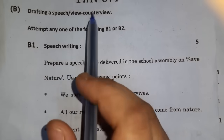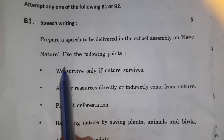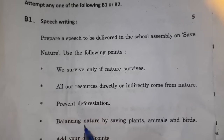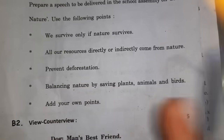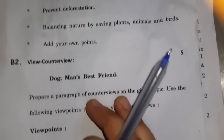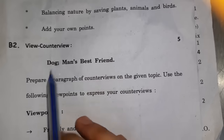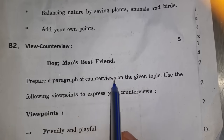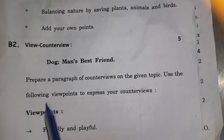Draft a speech or view/counter view — both were options worth 20 marks. Both options were on speech writing — a very easy topic: save nature, and points have been given. You should use these points and add on yourself. View counter view topic was: dog — man's best friend. Prepare a paragraph of counter views on the given topic using the following points to express your counter view.